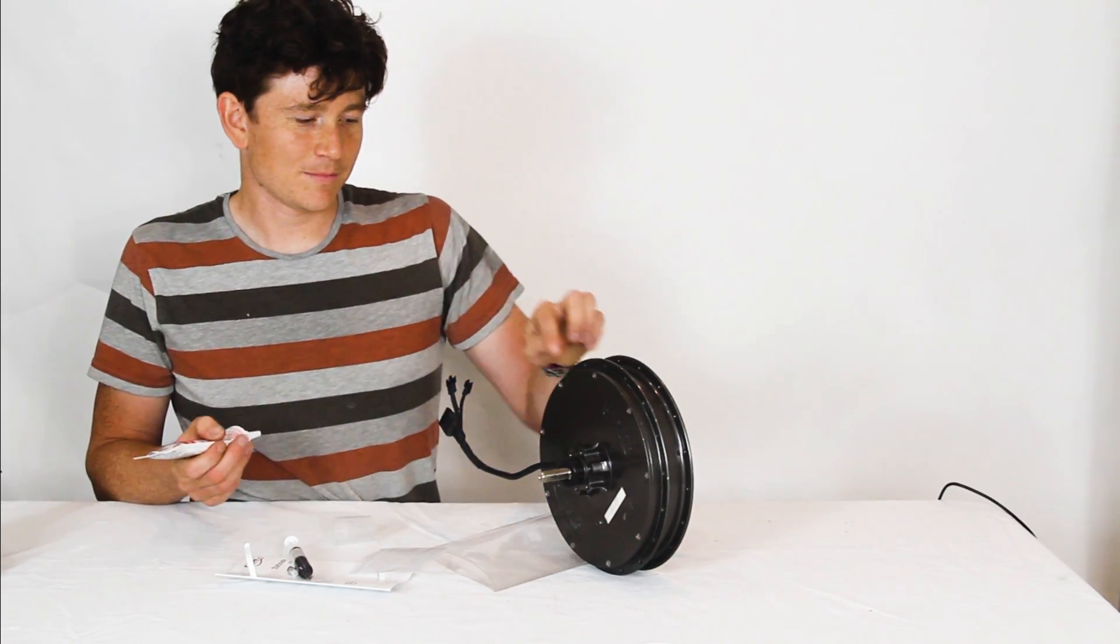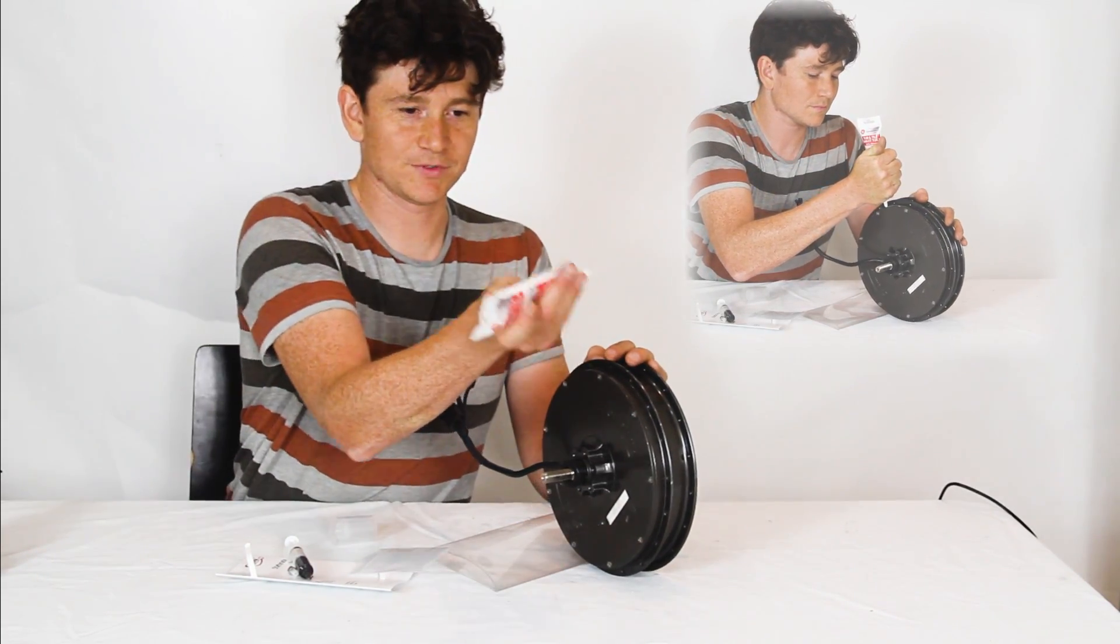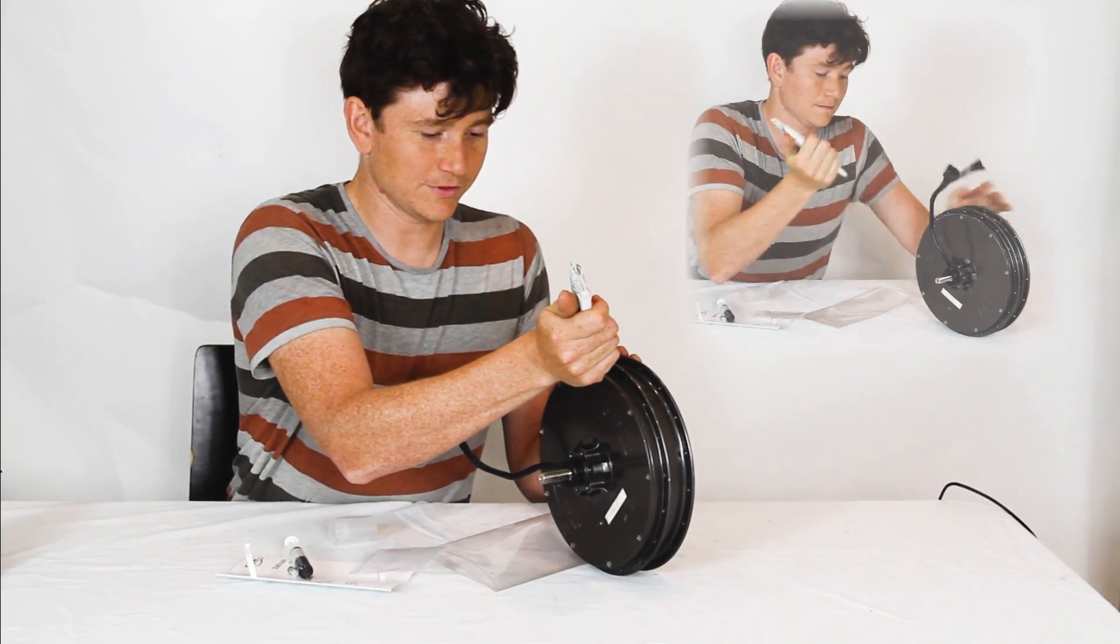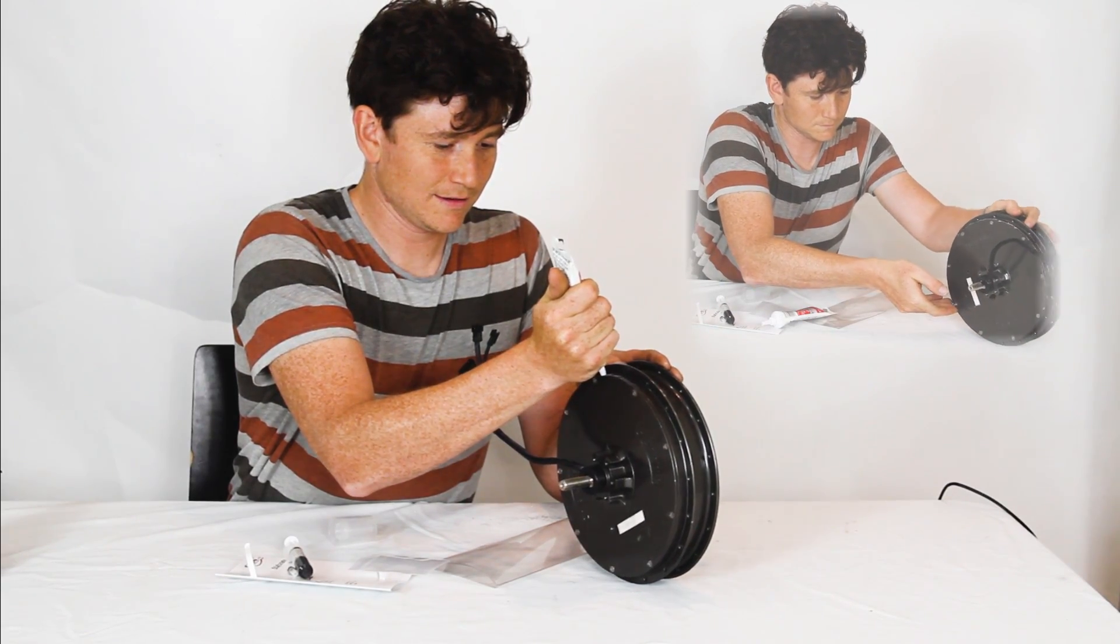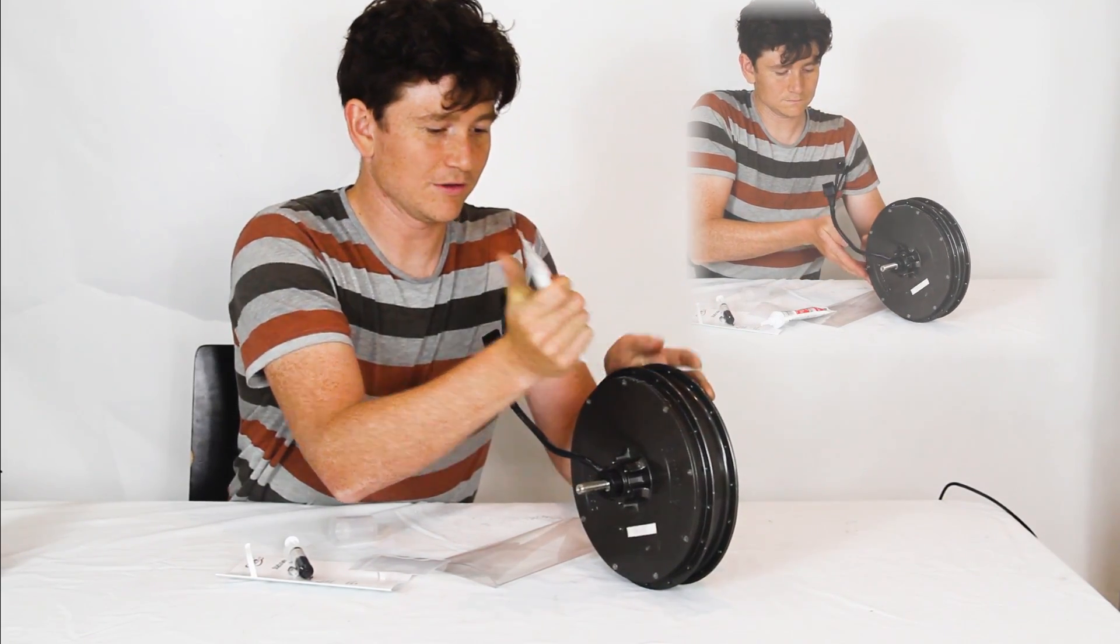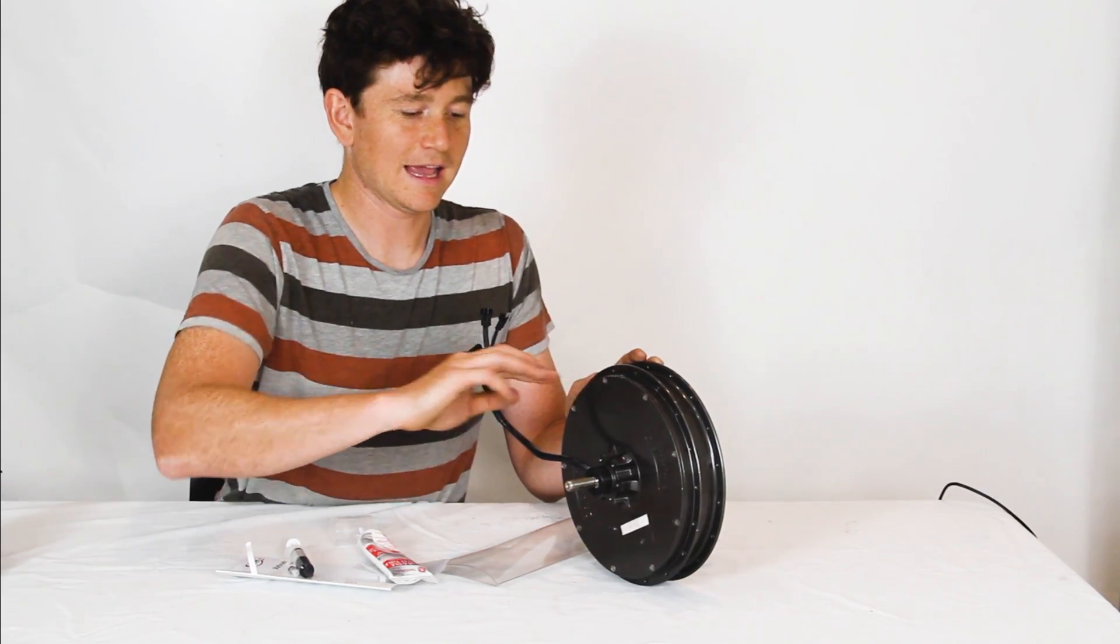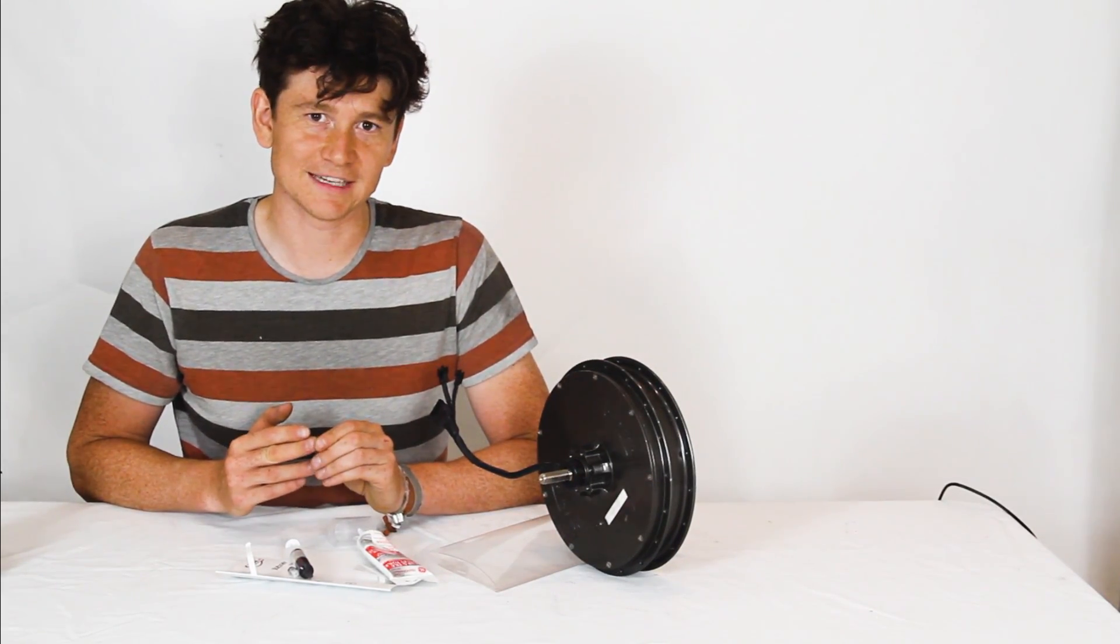Here's just any bathroom grade sealant silicone will do the job. And then just lay a bead around the gap. And you do this all around both sides. Use your finger to sort of smooth it out. And that will seal any holes that are present there so that your hub motor won't leak statorade in use.